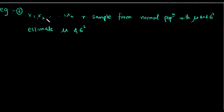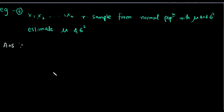Let's take another example. We have x1, x2, ..., xn from a normal population. We have mean mu and variance sigma squared. We have to estimate mu and sigma squared. We have to estimate these parameters using the maximum likelihood function.